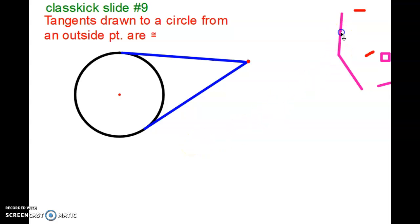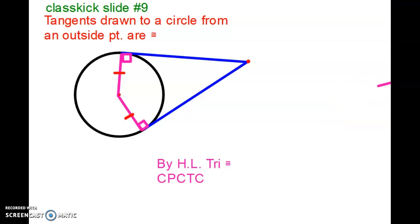So if I drop down a radius to those points of tangency, then I know I'm going to get a right angle. And we also know that these radii are congruent because they're the same radii in the same circle, that hash mark. And now when I draw from the center to the outside point, I make up two triangles.